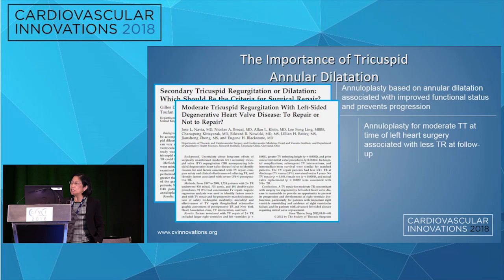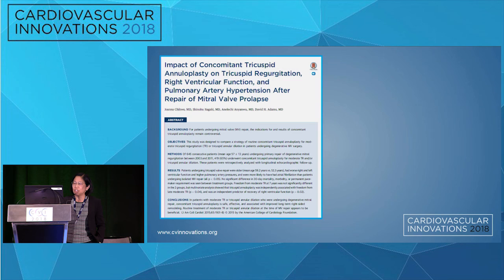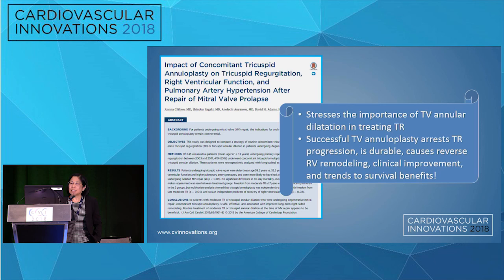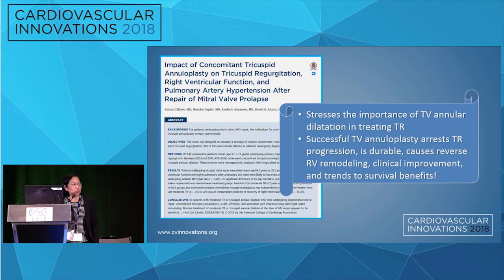Annuloplasty for moderate TR at the time of left heart surgery is associated with less TR follow-up. Annuloplasty for less-than-moderate TR is associated with reduced progression, improved remodeling, and better functional outcomes. A review by Joanna Chikwe shows that in the setting of concomitant left-sided disease, one should think about annuloplasty to arrest TR progression. While it causes reverse RV remodeling and clinical improvement, no surgical study has shown a survival benefit with a tricuspid annular repair.